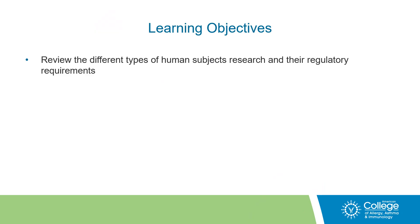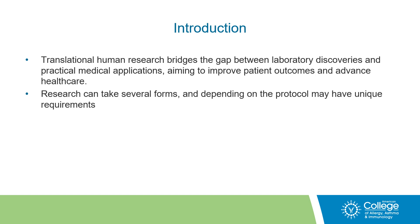In this presentation, I will review the different types of human subjects research and their respective regulatory requirements. Translational human research bridges the gap between laboratory discoveries and practical medical applications, aiming to improve patient outcomes and advance healthcare. This research can take several forms and, depending on the protocol, may have unique requirements.